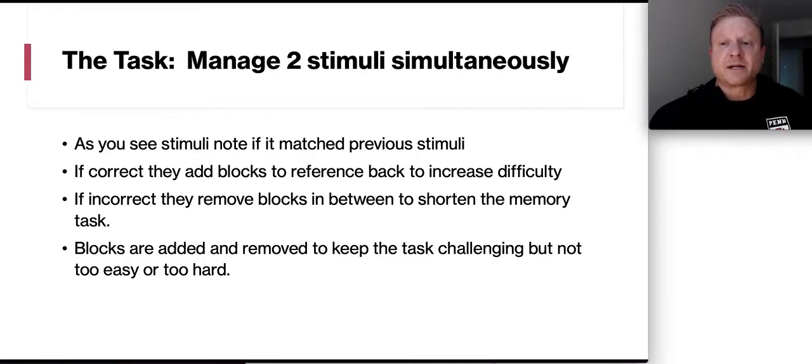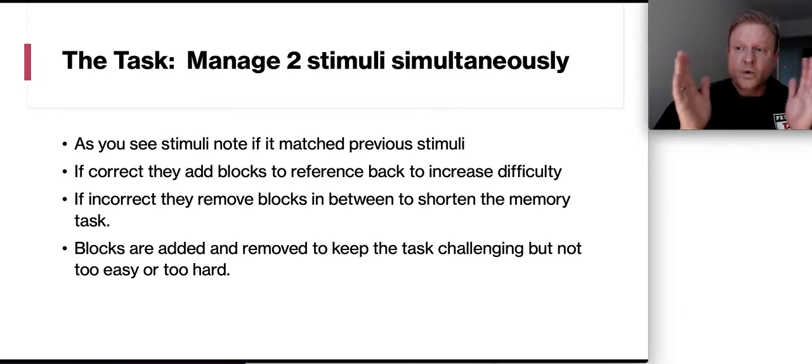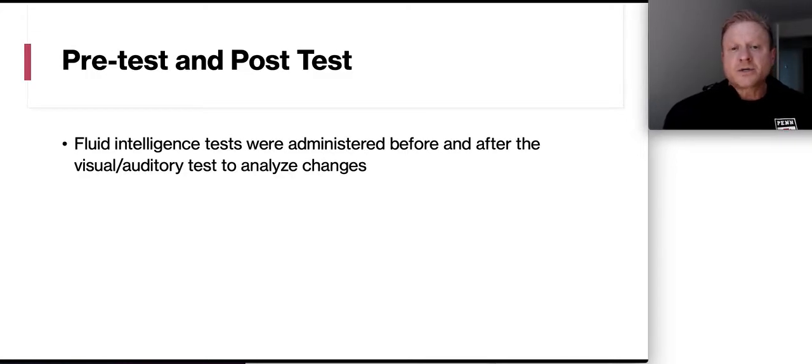So the task was basically to manage two stimuli simultaneously. So as you see stimuli, note if it matched in the previous stimuli. So you just have to remember those two things, and then remember that you saw it again, and then record that. So if you are doing well on the test, they would add blocks to reference back to increase the difficulty. But if you kept getting them wrong, they would remove blocks to shorten the memory task and make it easier for you. So blocks are added and removed to keep the task challenging, but not too easy and not too hard. So it was always adapting to the individual. They also gave you a pre-test and a post-test on fluid intelligence to see, did the working memory test make a difference?